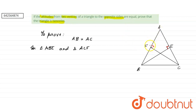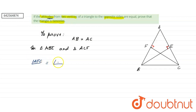Both angles AFC and AEB are already equal — they are 90 degrees, because they are the altitudes. Altitudes are drawn at 90 degrees. So angle AFC equals angle AEB, both being 90 degrees.